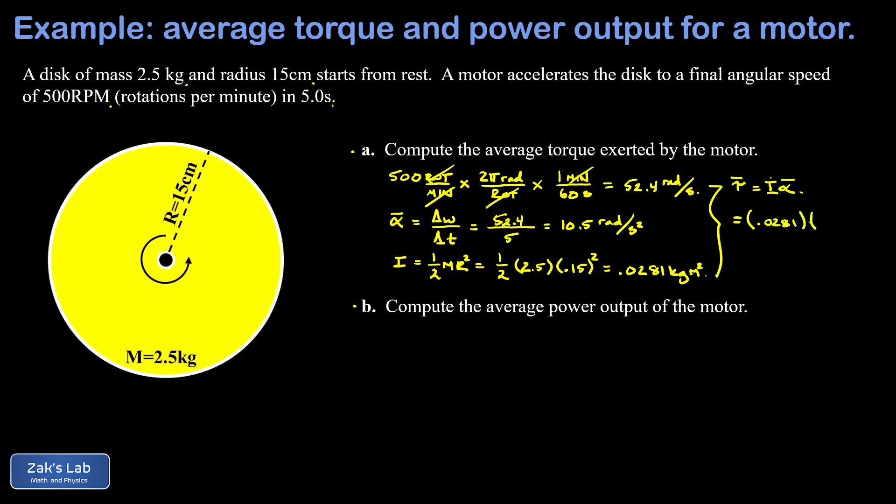And this gives us a value of 0.295 newton meters. Next, we want the average power output of the motor.